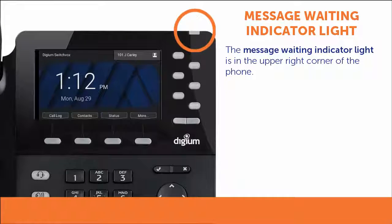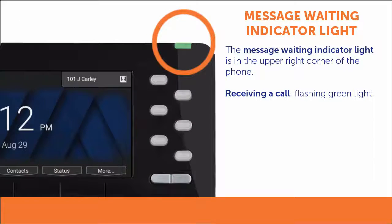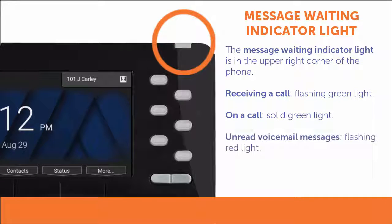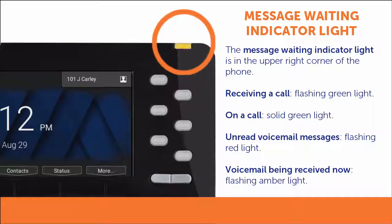In the upper right corner of the phone is the message waiting indicator light. A flashing green light indicates that you are receiving a call. A solid green light indicates that you are currently on a call. A flashing red light indicates that you have unread voicemail messages in your inbox. A flashing amber light indicates that someone is leaving you a voicemail right now.